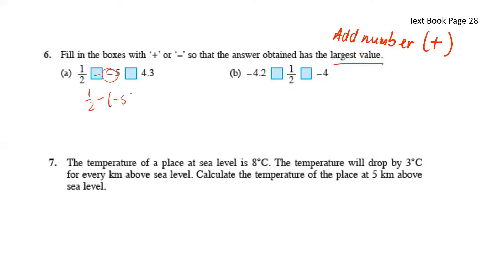So it will become 1 over 2, negative, negative 5. And here, since we want to add, we'll just put a plus here, plus 4.3. So this negative and negative will give us positive 5 plus 4.3. So here we'll get the biggest number. Here will be negative and here will be positive.